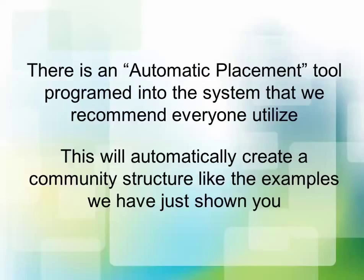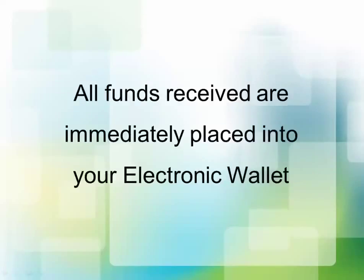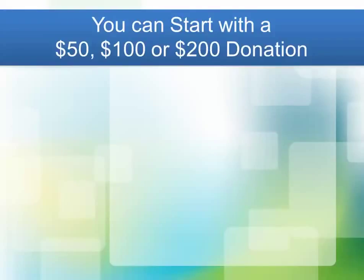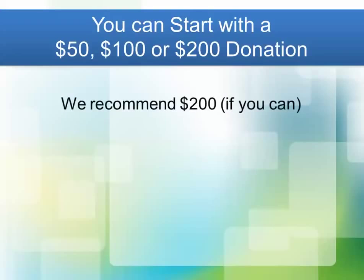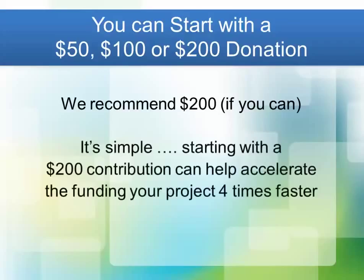There's an automatic placement tool programmed into the system that we recommend everyone utilize. This will automatically create a community structure like the example we've just shown you. All funds received are immediately placed into your electronic wallet. You can start with a $50, $100, or $200 donation, but we recommend going with the $200 if you can. Starting with a $200 contribution can help accelerate the funding of your project literally four times faster — people tend to do what you do, and if your community are all sharing $50 donations, it takes four times as many people to reach the funding compared to each person doing $200.